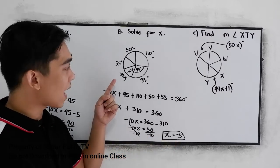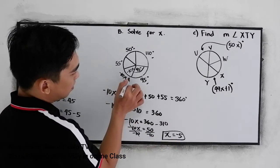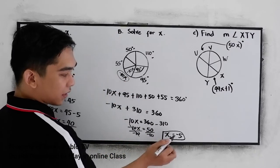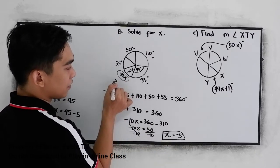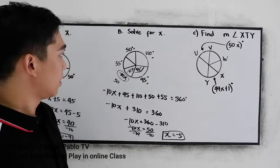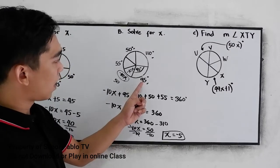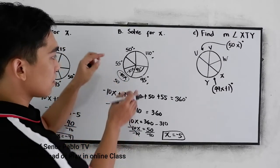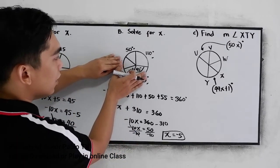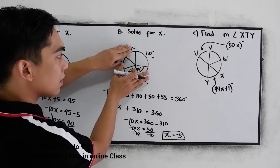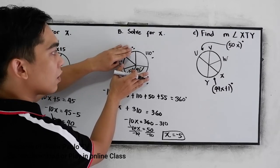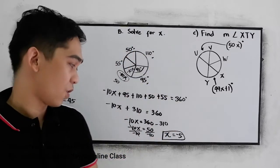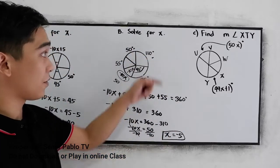The value of X is negative 5. If we substitute, this arc measures negative 10 times negative 5, which is positive 50. Let us check: 95 plus 55 is 150, plus 50 is 200, plus 50 is 250, plus 110 is 360. Correct — X is equal to negative 5.